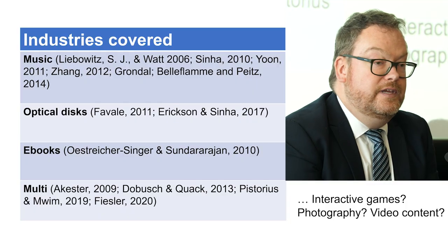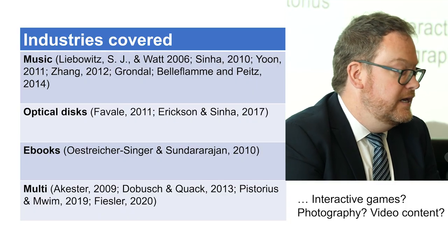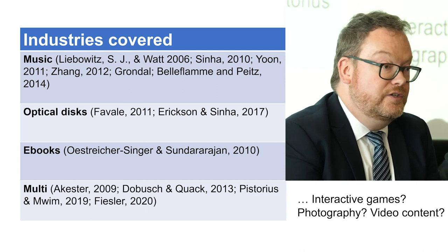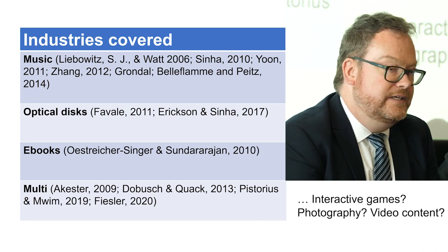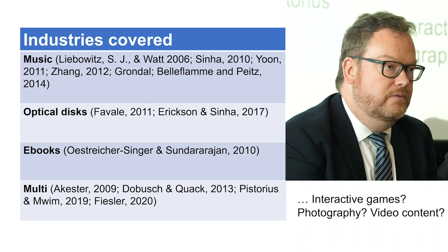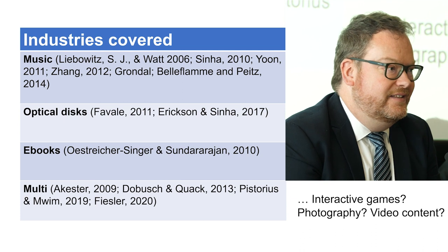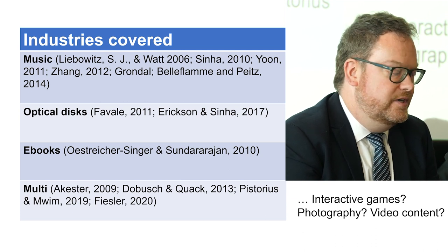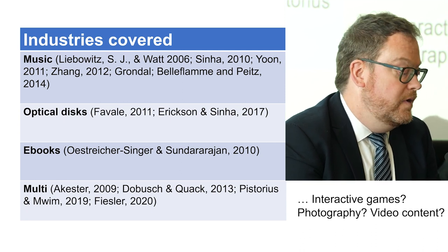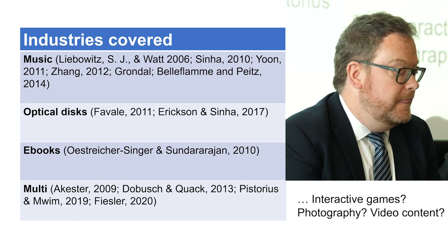Some alternative proposals: DRM might actually reduce searchability of content, making it harder to find for users in the long tail, as Zhang studied; or that DRM could work as a sociological reinforcement of morals and steer people away from piracy, as discussed by Yun. In terms of industries covered by those 24 empirical studies, there's a real abundance of studies on music, optical discs including DVDs and music CDs, e-books. But there are gaps — none that looked at photography, video content, or interactive video games.